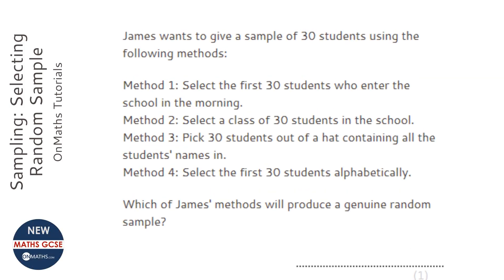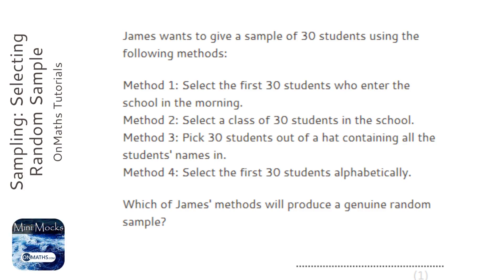When doing a genuine random sample, you want to make sure that the people you're picking are representative of a population. So if we look at method one — selecting the first 30 students who enter the school in the morning — there might be a type of student who enters the school early, so that would not be a genuine random sample.